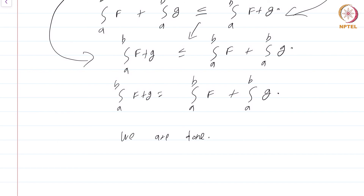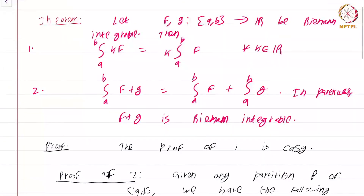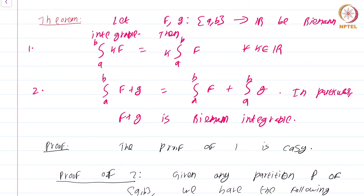So, this property — that the integral of k·f is k times the integral of f, and that the integral of f+g equals the integral of f plus the integral of g — is called linearity. Essentially, the collection of all Riemann integrable functions, usually denoted ℛ[a,b], can be made into a vector space over the real numbers, and the integral is a linear functional acting on ℛ[a,b]. This allows us to study integration from the perspective of linear algebra. If you are familiar with linear algebra, I urge you to explore the properties of the Riemann integral as a linear functional.